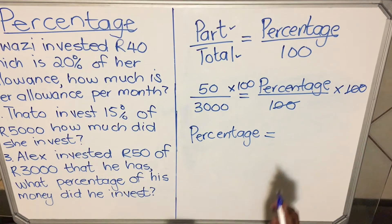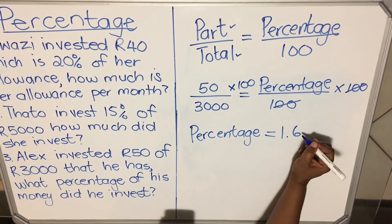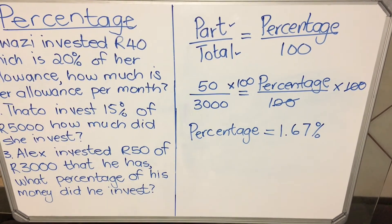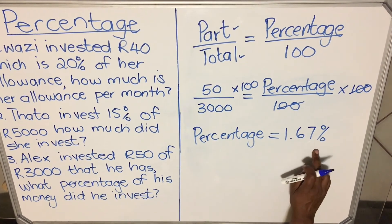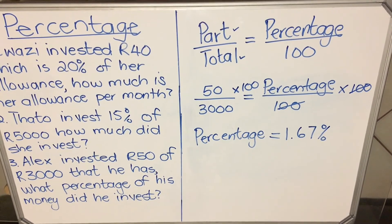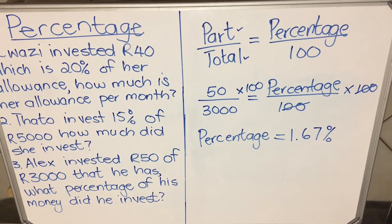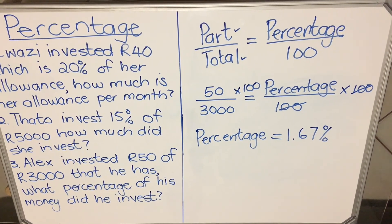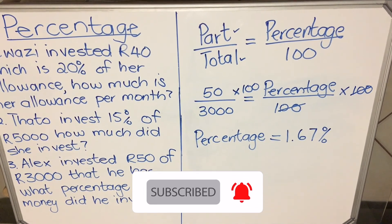Your calculator gives 1.6666..., so you round it off to 1.67%. It depends on your question paper — they will tell you whether to round to two or three decimal places. So 1.67% is the percentage that Alex is investing. With these formulas, you need to practice — this is one of the easiest formulas to memorize, but you really need to memorize it before your exam. Thank you for watching.